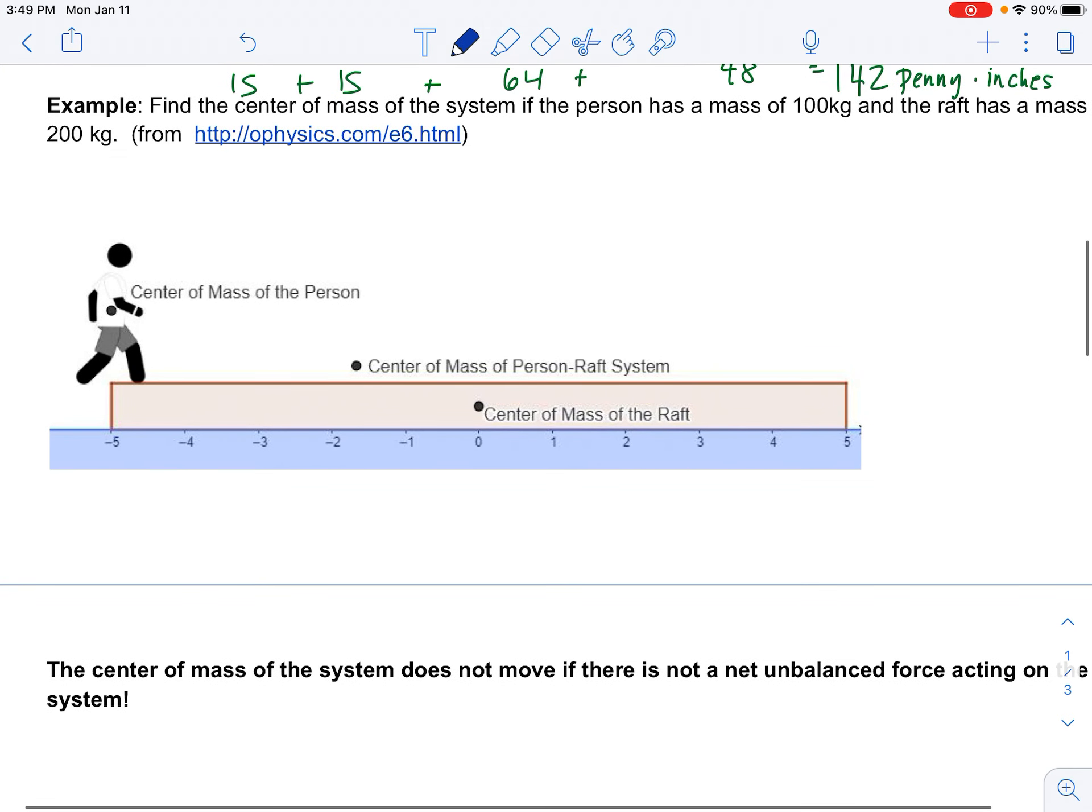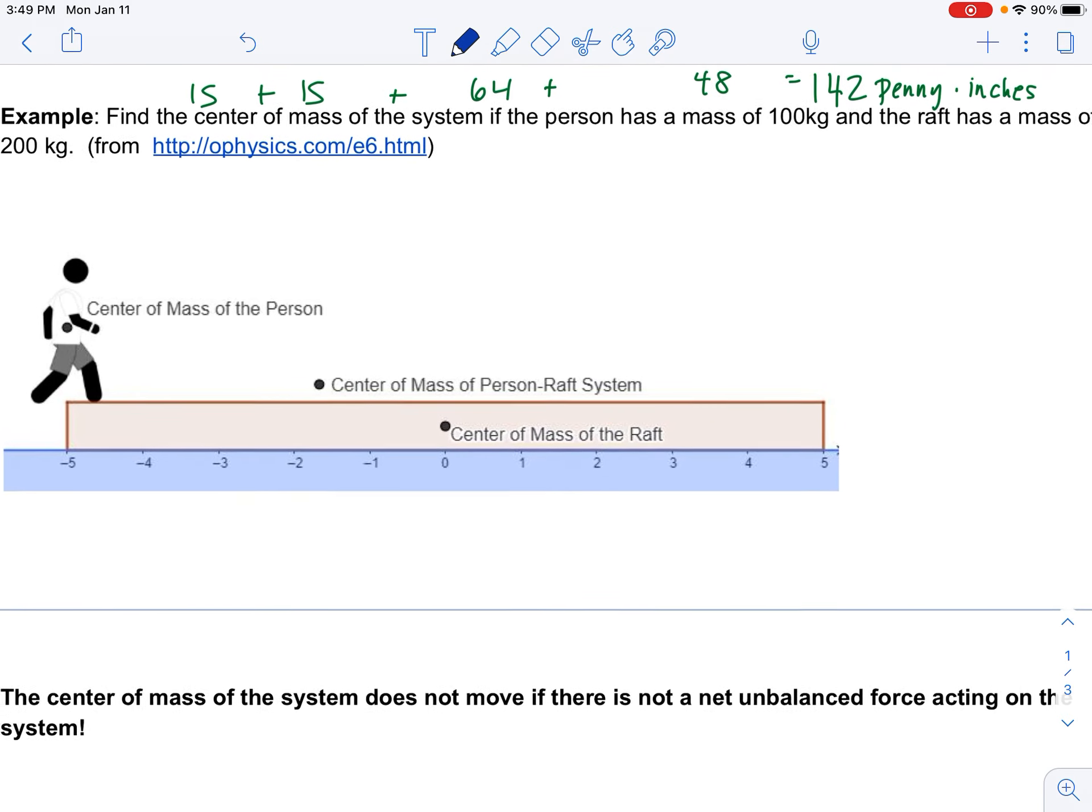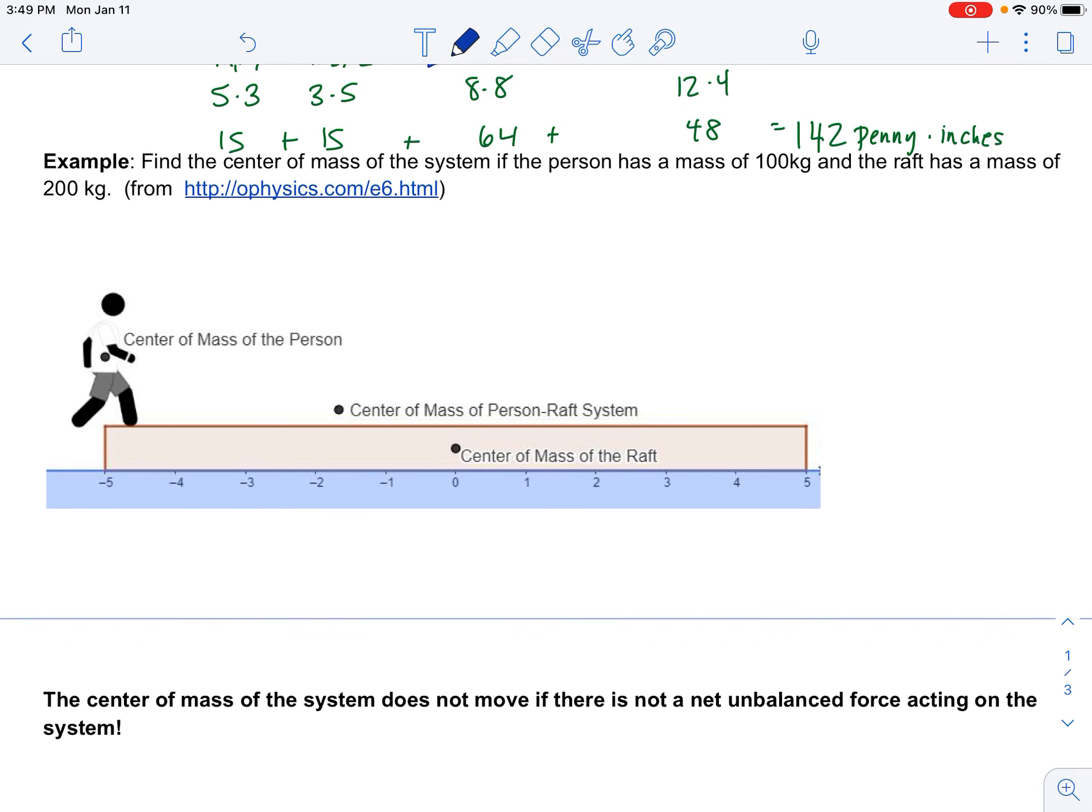Okay, so let's look at another example. Find the center of mass of a system if the person has a mass of 100 kilograms and the raft has a mass of 200 kilograms. So this system is already drawn for me. I have a number line and I have the mass. This person's 100 kilograms and the raft is 200 kilograms. And I'm going to use the location of the center of mass of the raft as its location.